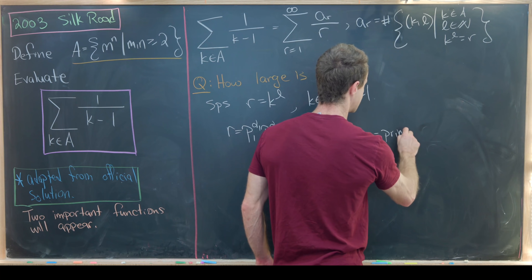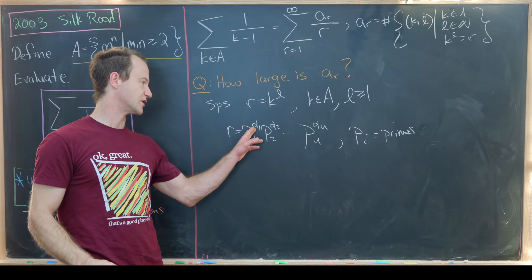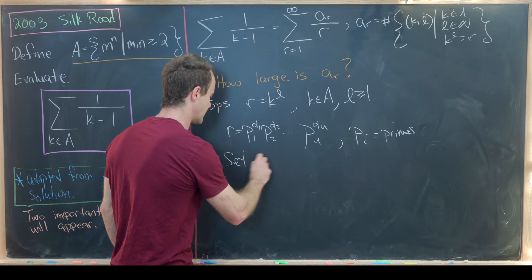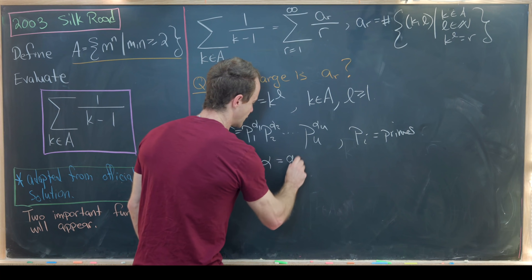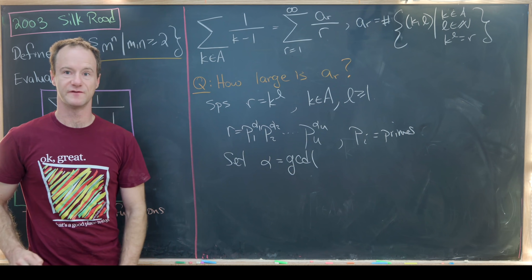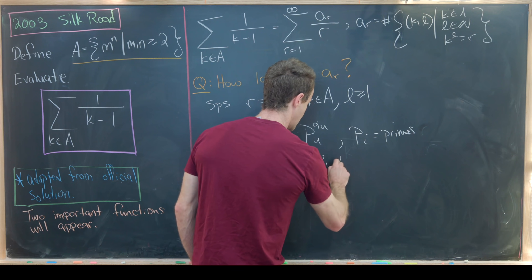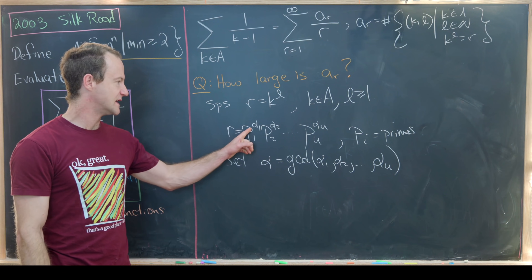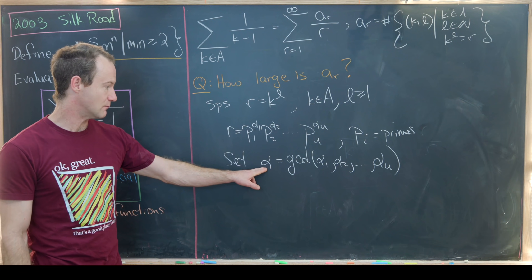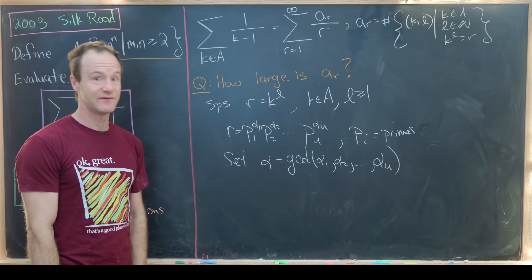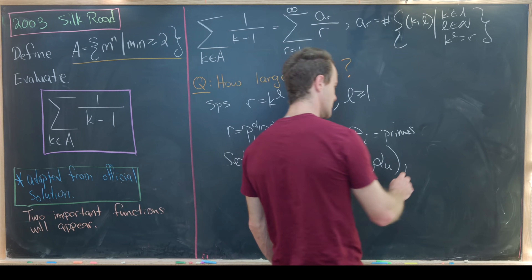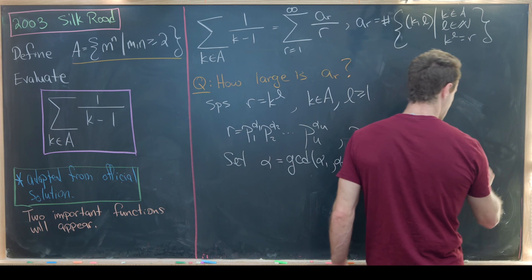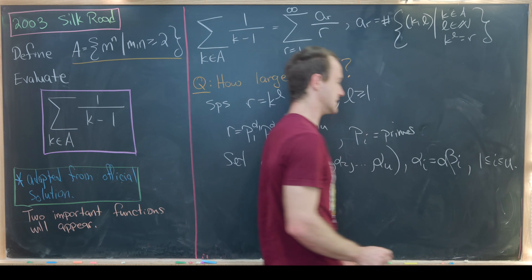Next, we're going to factor r using its prime factorization by the fundamental theorem of arithmetic. We can write r as p_1 to the alpha_1 times p_2 to the alpha_2, all the way up to p_u to the alpha_u, where all the p_i's are distinct primes. Then we define alpha as the greatest common divisor of all of these exponents: alpha_1, alpha_2, up to alpha_u. We can then write each exponent as a multiple of alpha, so alpha_i equals alpha times beta_i for all i between 1 and u.